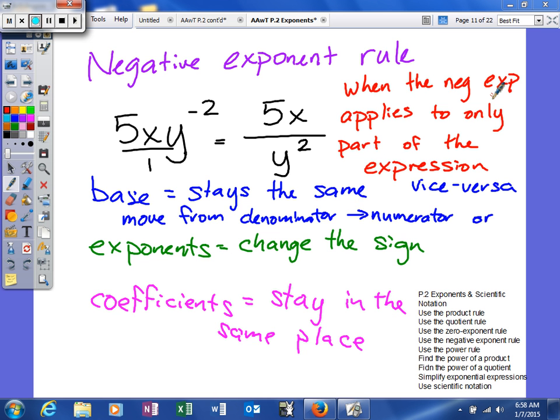When the negative exponent applies to only part of the expression. So if you look at this, we have 5xy to the negative 2 power. The denominator right now is 1 because there wasn't a current denominator written.